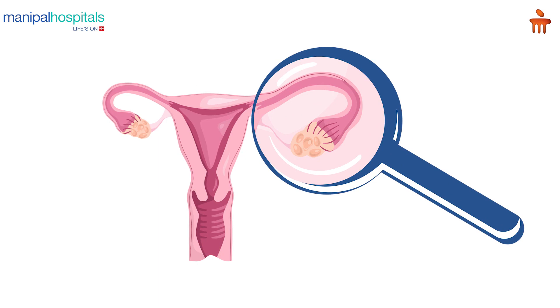AMH, or Anti-Mullerian Hormone, is an ovarian reserve test. That is, it is an indirect measure of the total number of eggs present in your ovaries. Every woman is born with a certain number of eggs, and with every menstrual cycle she will lose some of her eggs, so over the years there will be a gradual loss in the total number of eggs.